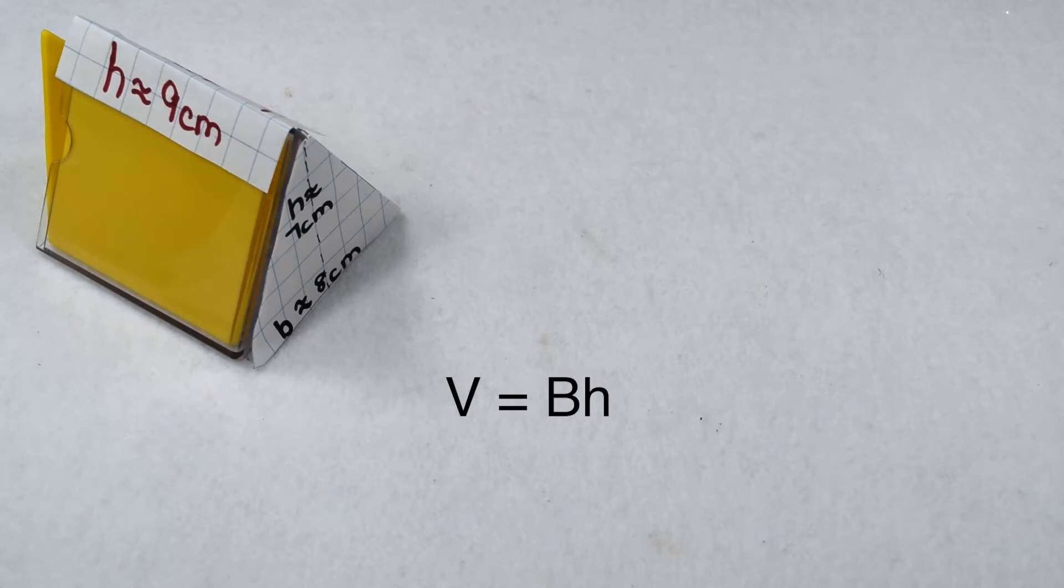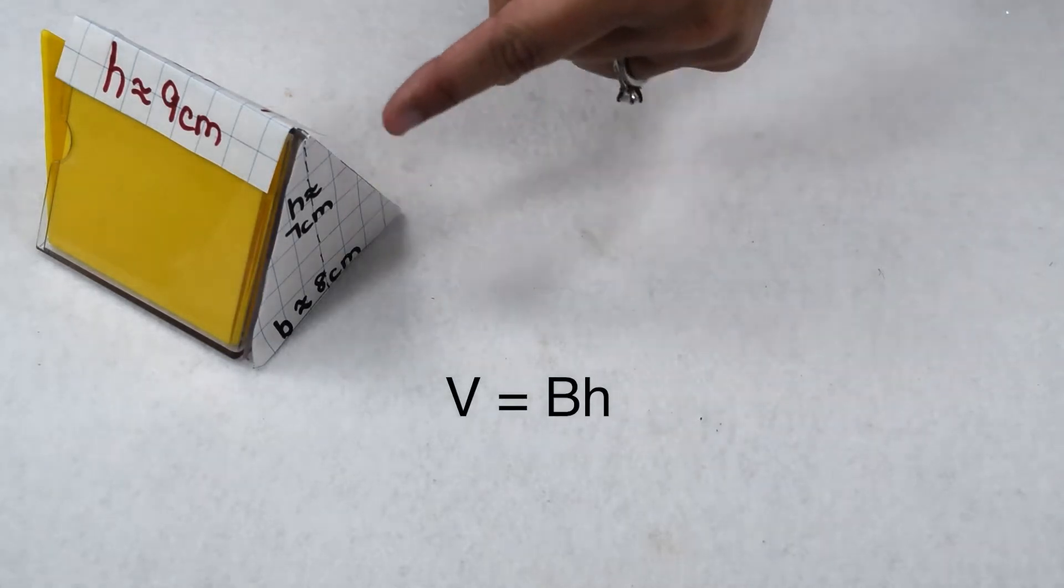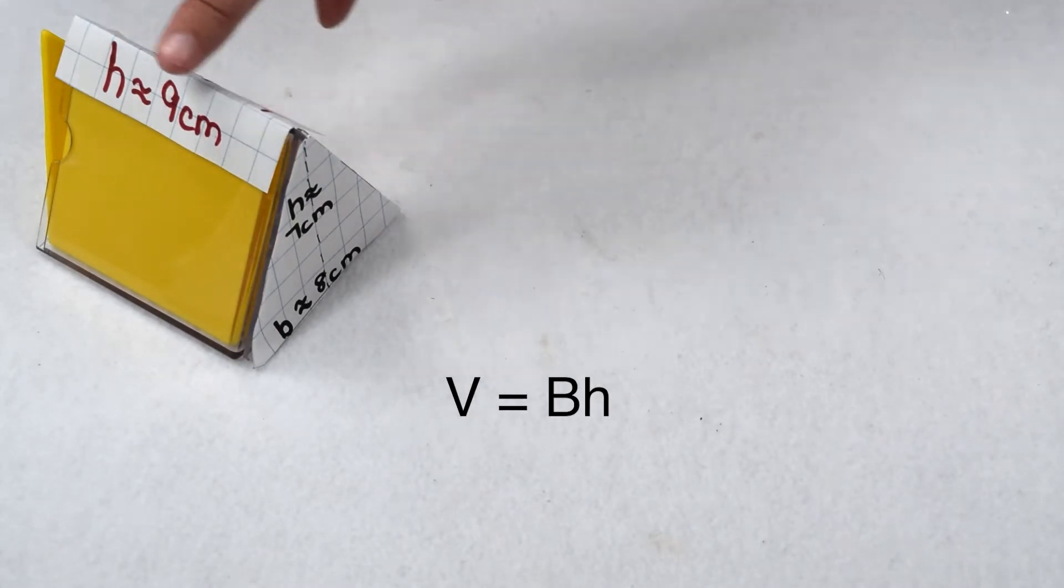Our general formula for finding the volume of any prism is V equals BH, where capital B is the area of the base of the prism and H is the height of the prism.